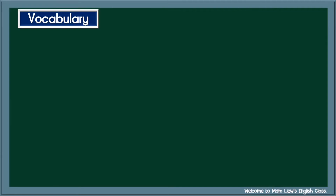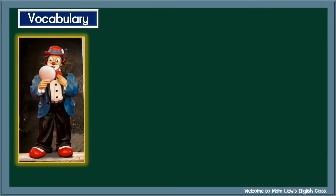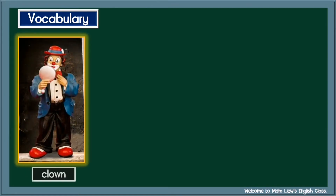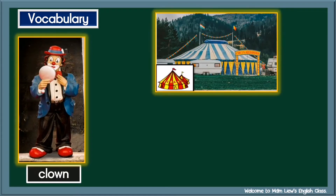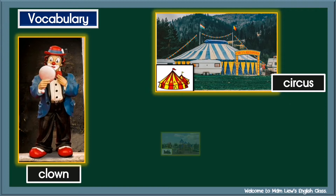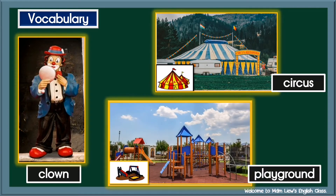Let's learn some new vocabulary. Listen and say the words. One: clown — badut — clown. Two: circus — circus — circus. Three: playground — taman permainan — playground.